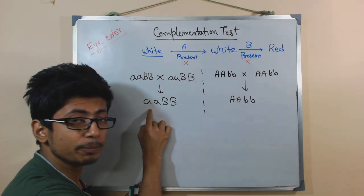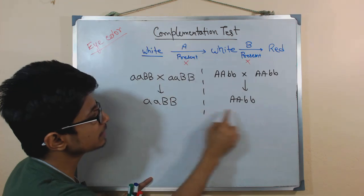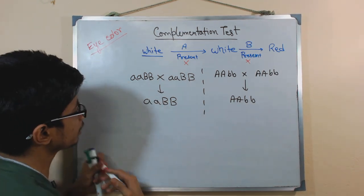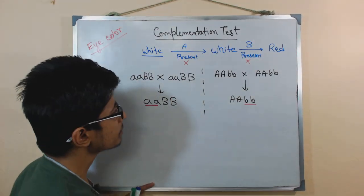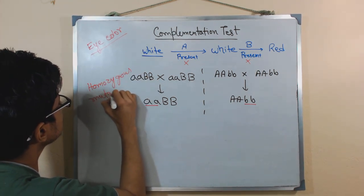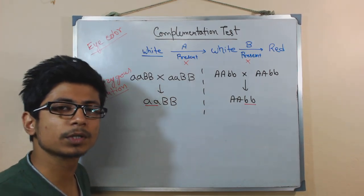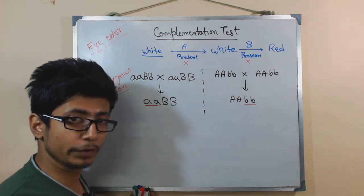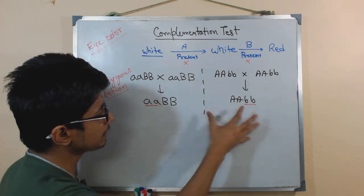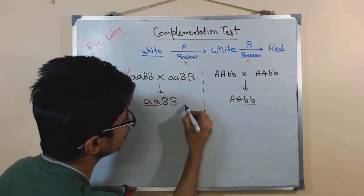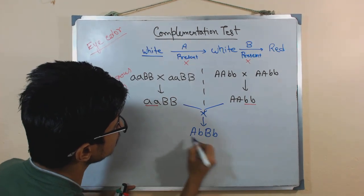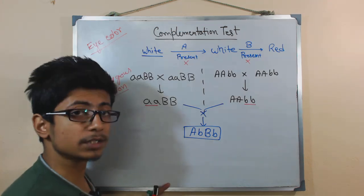We choose individuals with homozygous recessive mutations because the dominant genes are fine but the homozygous recessive genes are mutated — that is why we denote them as mutated. This is also a limitation of this process: we can only apply it to homozygous mutations. Otherwise, this experiment will not work or provide any result. Once we have these individuals, we do a cross between them, and the offspring we get are in a heterozygous form.